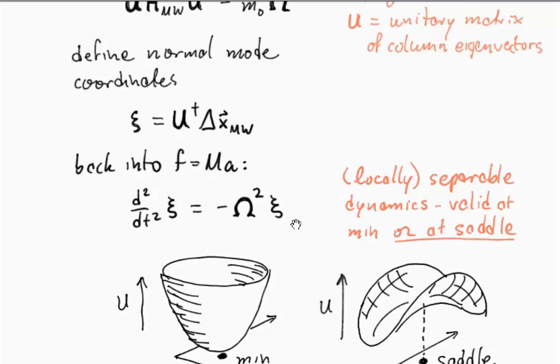And we haven't really said that this had to be a minimum, right? So this can also be true at a saddle point, but of course that would no longer be a harmonic oscillator. It would be an exponentially growing displacement from the saddle in time.